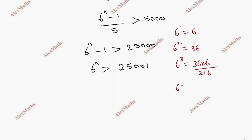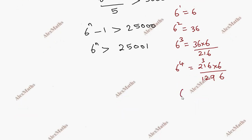6 power 4 is 216 times 6 which equals 1296. Okay, and then 6 power 5.